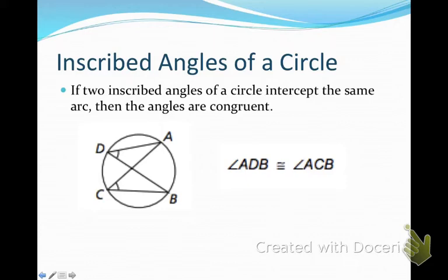So let's take a look at our diagram. We have angle ADB that intercepts arc AB, and then we also have angle ACB, which intercepts arc AB. Since they both intercept the same arc, those two angles are congruent.